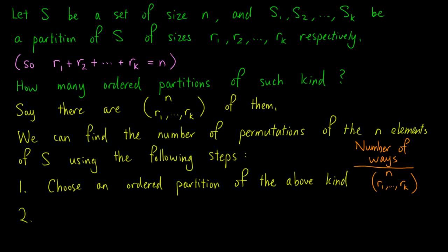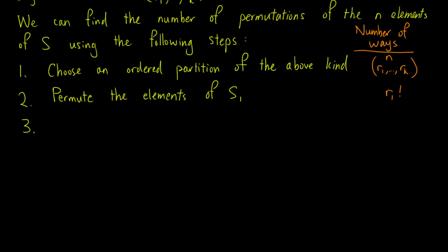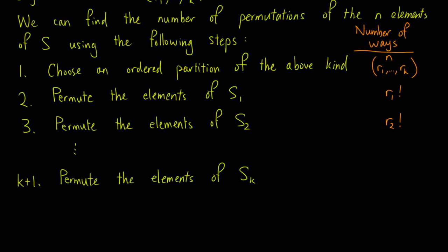As the second step, we permute the elements of S1, and the number of ways to do so is R1 factorial. Step 3, we permute the elements of S2, and the number of ways to do so is R2 factorial. Similarly, we permute the elements of each subset, until the (k+1)-th step, where we permute the elements of Sk, and the number of ways to do so is Rk factorial.